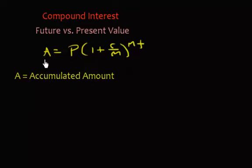In previous videos we said that A represented accumulated amount, which it still does, but we can also refer to it as the future value. How much is my money worth in the future?